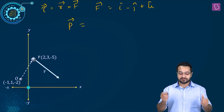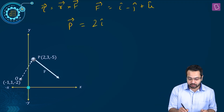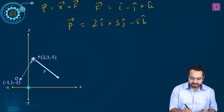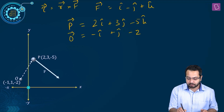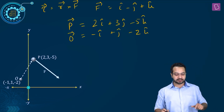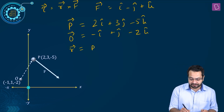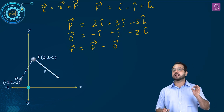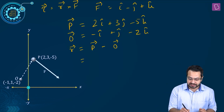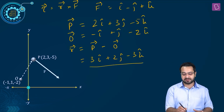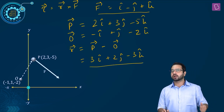To find R: the position vector of point P with coordinates (2, 3, minus 5) is 2i plus 3j minus 5k. Similarly, the position vector of point O with coordinates (minus 1, 1, minus 2) is minus i plus j minus 2k. Vector R equals OP, found by subtracting position vector of O from position vector of P. This gives 3i plus 2j minus 3k. Now R and F are known, so we take their cross product.